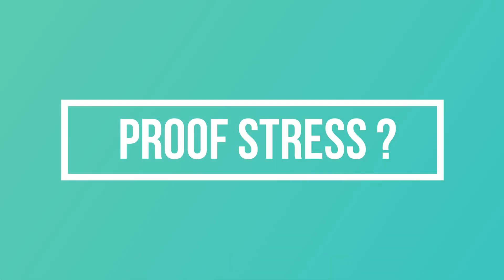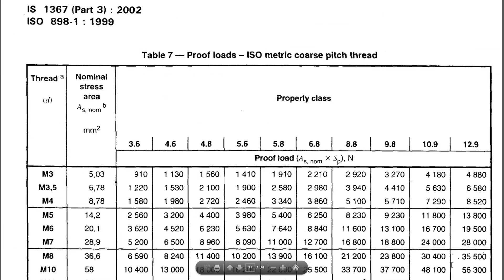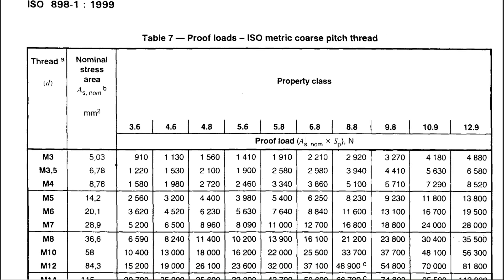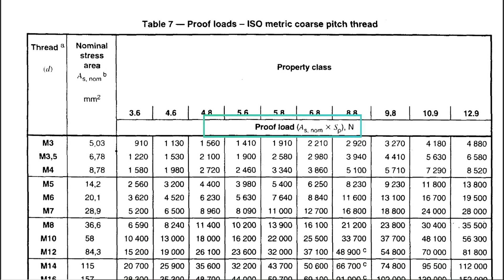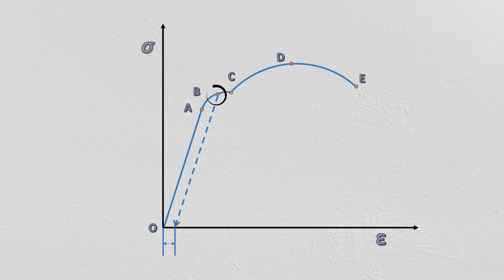Now I will answer what is proof stress and why it is important in the design of fasteners. In case of fasteners, instead of yield strength, the term proof load or proof stress is frequently used. Because if we load the bolt up to yield strength, bolt will have permanent deformation and it cannot be used again.